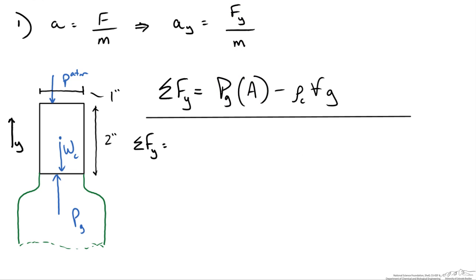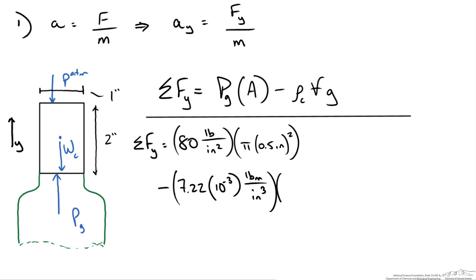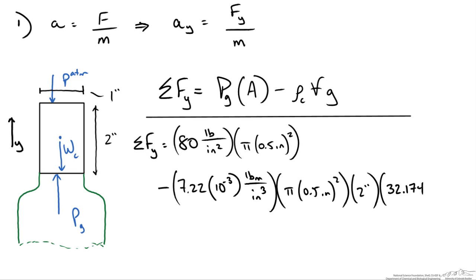The sum of forces in the y direction equals gauge pressure times cross-sectional area, which is pi times radius squared — so pi times 0.5 inches squared. We will stay in inches throughout. This minus our density times volume: the cross-sectional area pi times 0.5 inches squared times the height of 2 inches gives our cork volume, times gravity which is 32.174 feet per second squared, converted to inches.